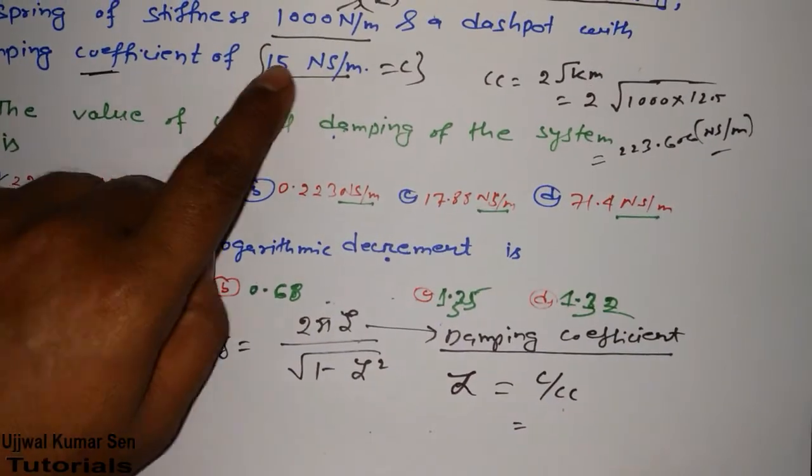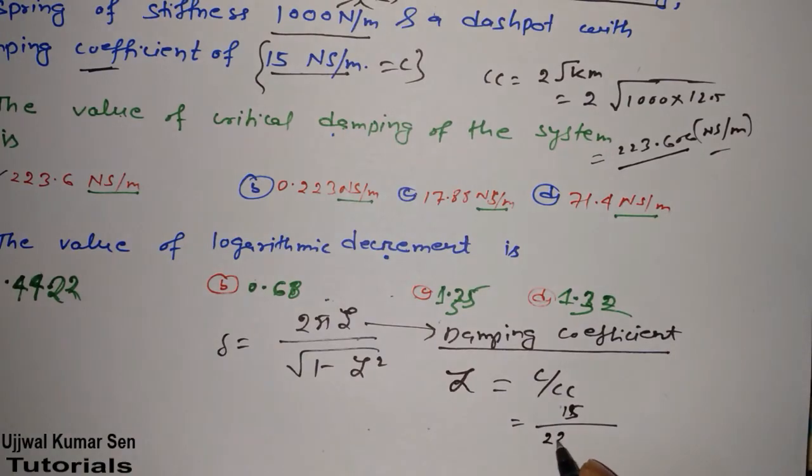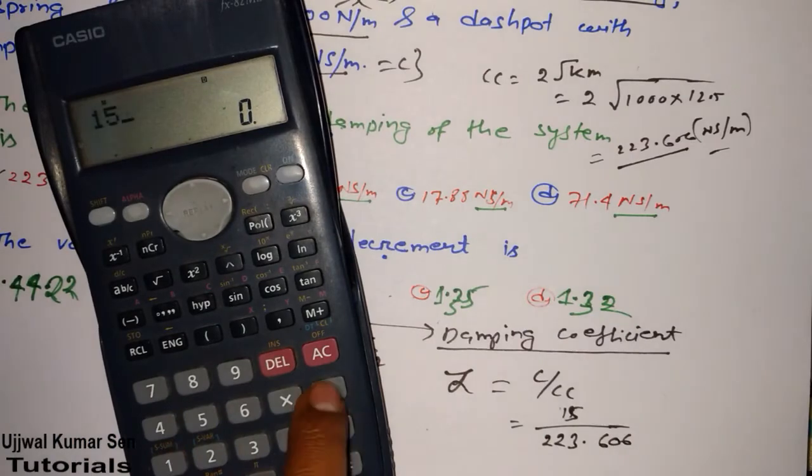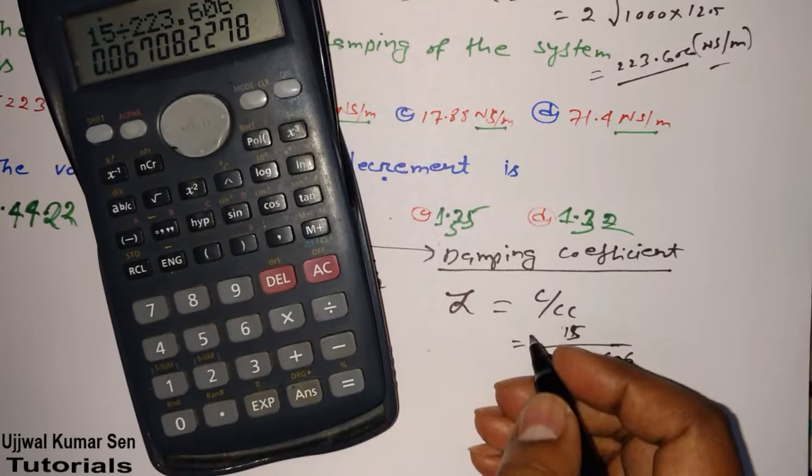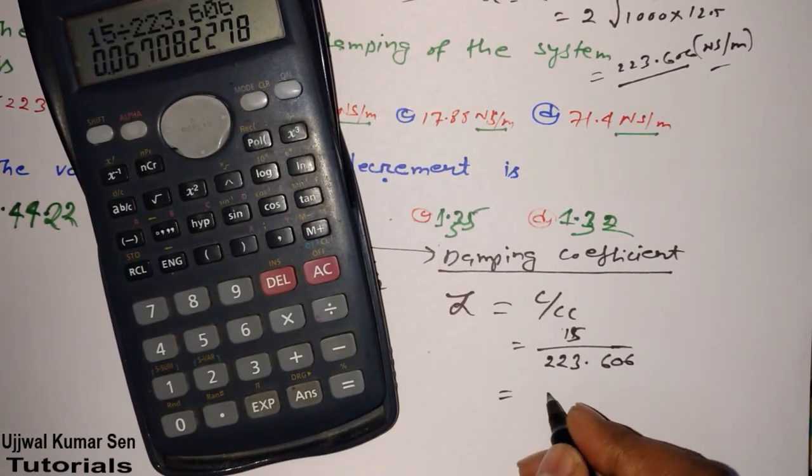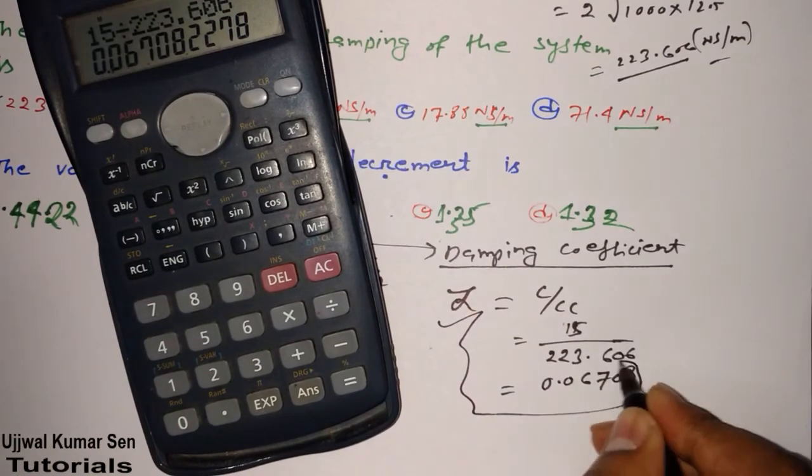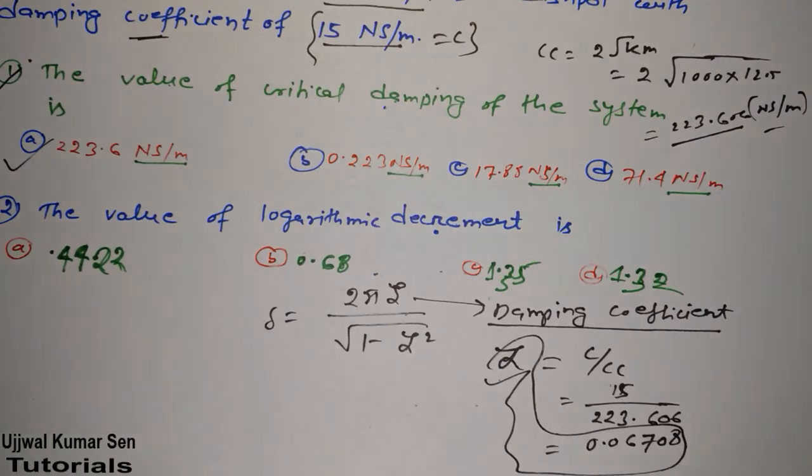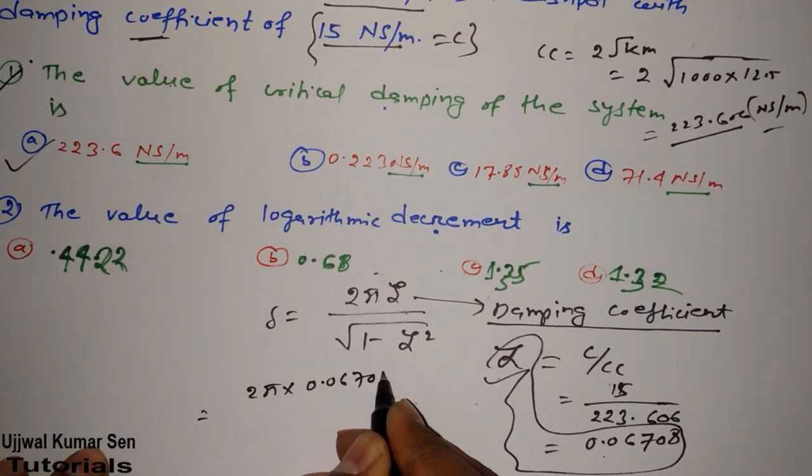But we do know zeta is equal to ζ = C/Cc. So what is C? We have given C is 15. And we have calculated Cc that is 223.606, right? So do calculation again. 15 divided by 223.606. So we got here. What is the value exactly we are getting here? It's a ratio. So there will not be any unit of this. So we are getting the value of zeta is 0.06708, right? Now we have to put this value here.